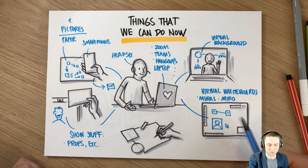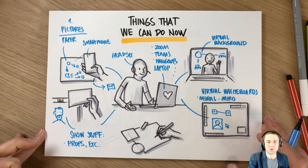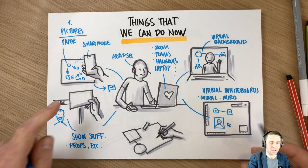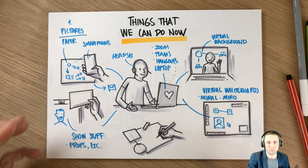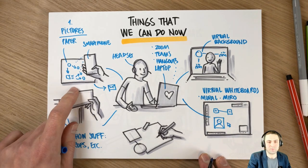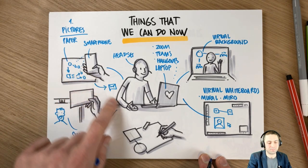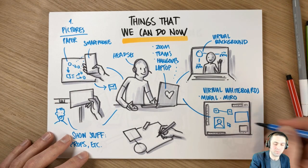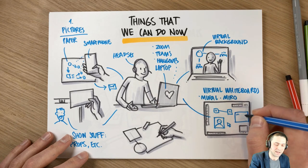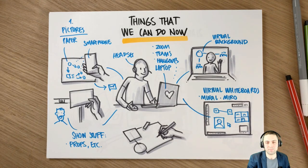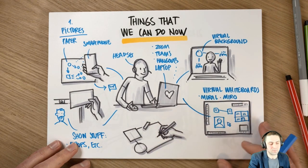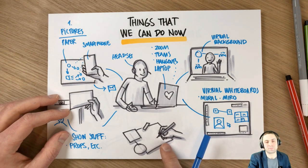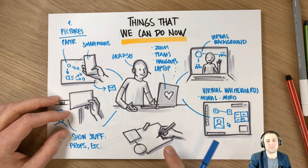Most of the time when people start using a virtual whiteboard they just stick to the standard tools — virtual sticky notes in mind maps — which is cool. But remember you can draw physically. Why not take a picture with your smartphone and upload your diagram into your Miro board? You could draw a canvas or template, upload it, and ask people to start placing sticky notes over that template.